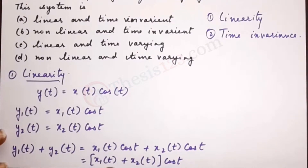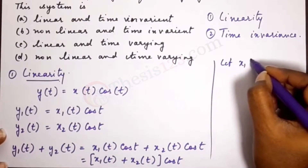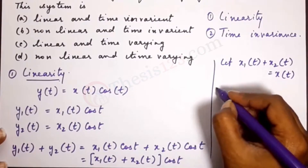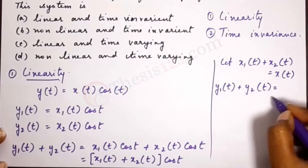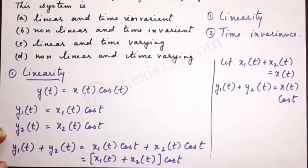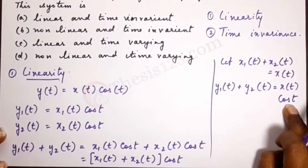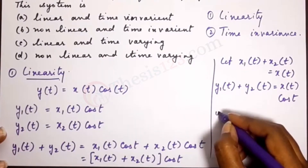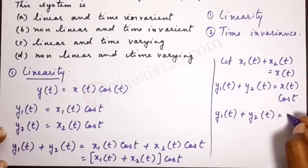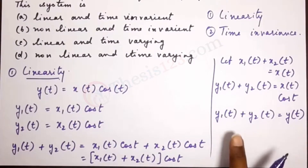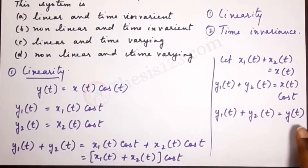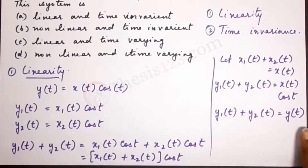Now let's assume that x1(t) + x2(t) = x(t). Substituting, we get y1(t) + y2(t) = x(t)·cos(t). But x(t)·cos(t) is exactly the original function y(t). So we obtain y1(t) + y2(t) = y(t). This satisfies the additive property, and therefore the given system is linear.